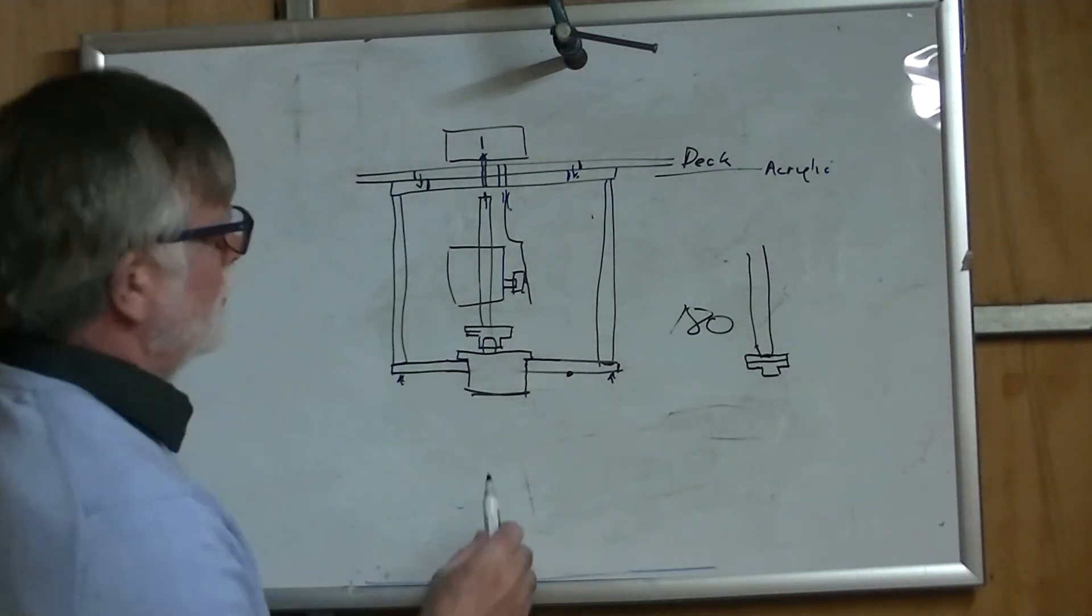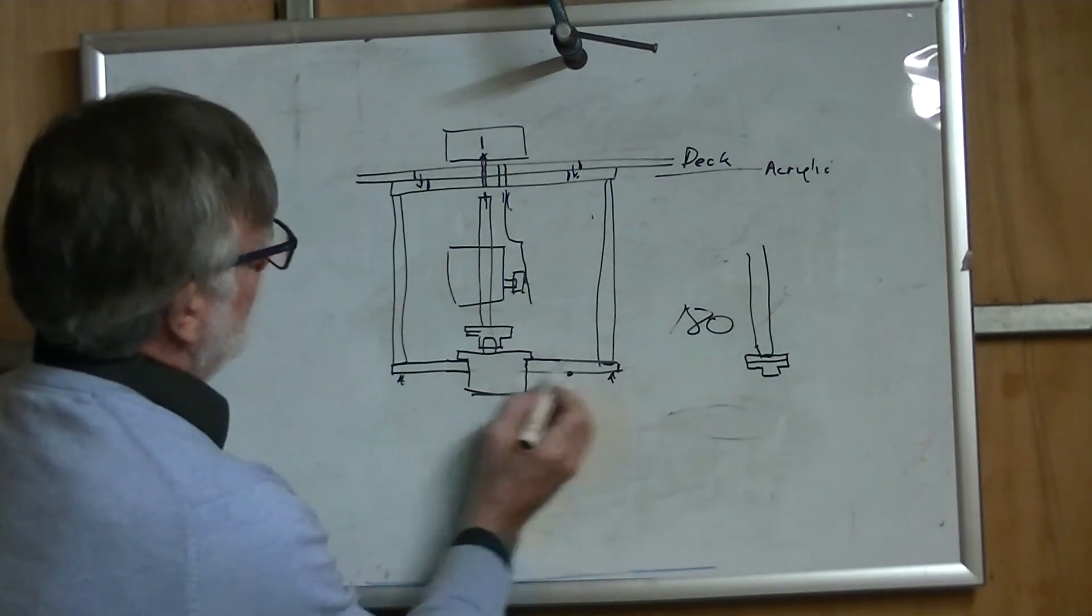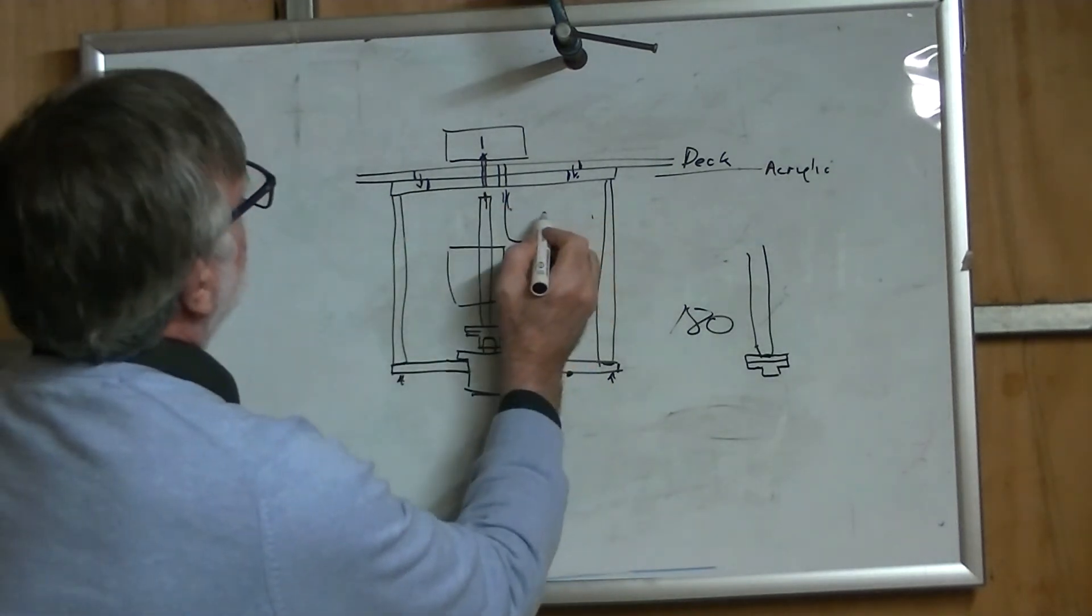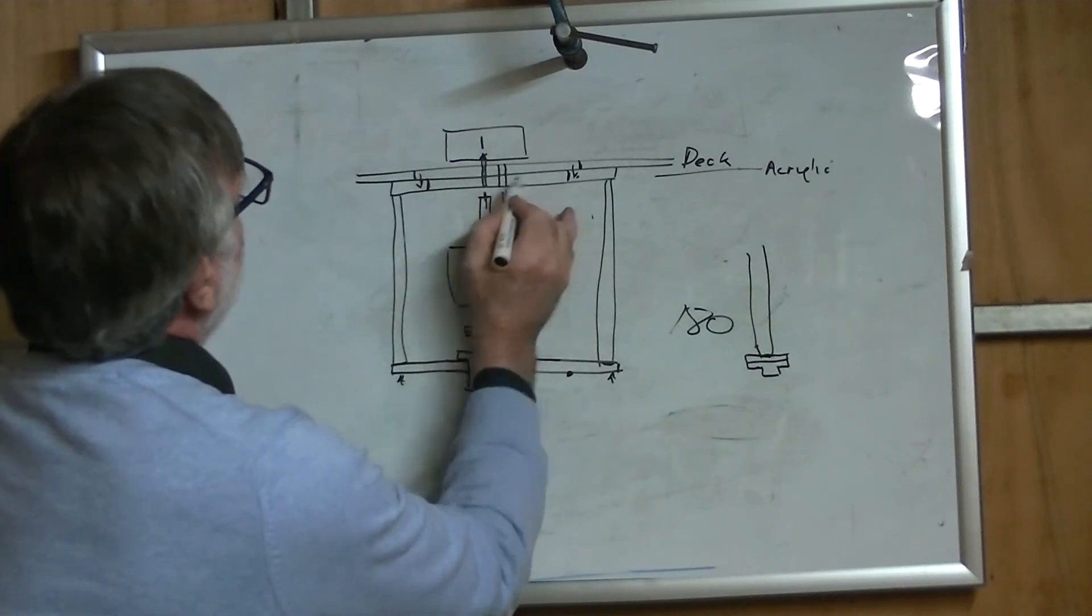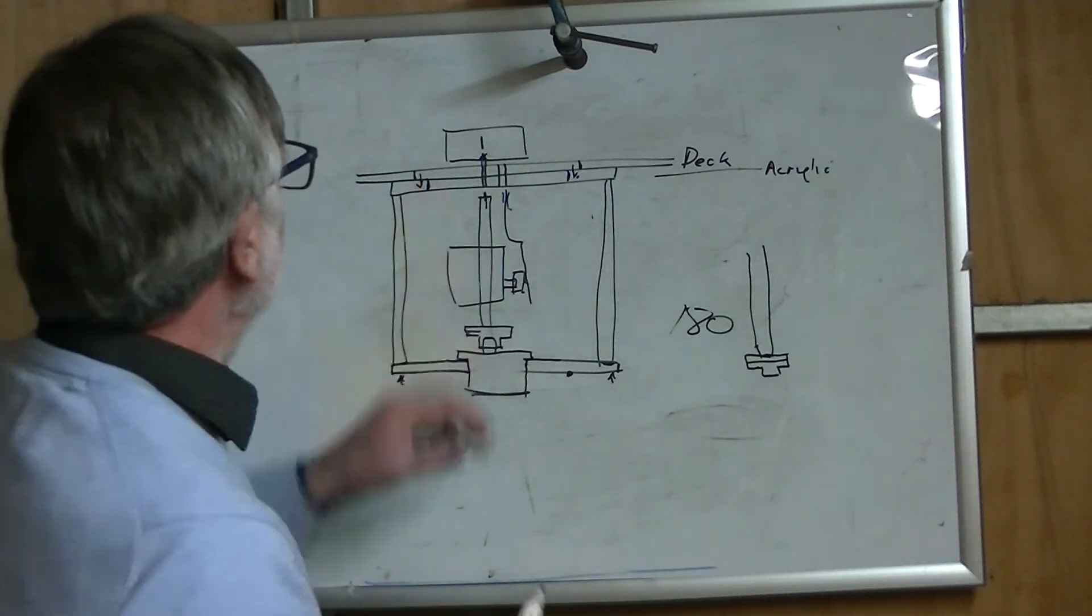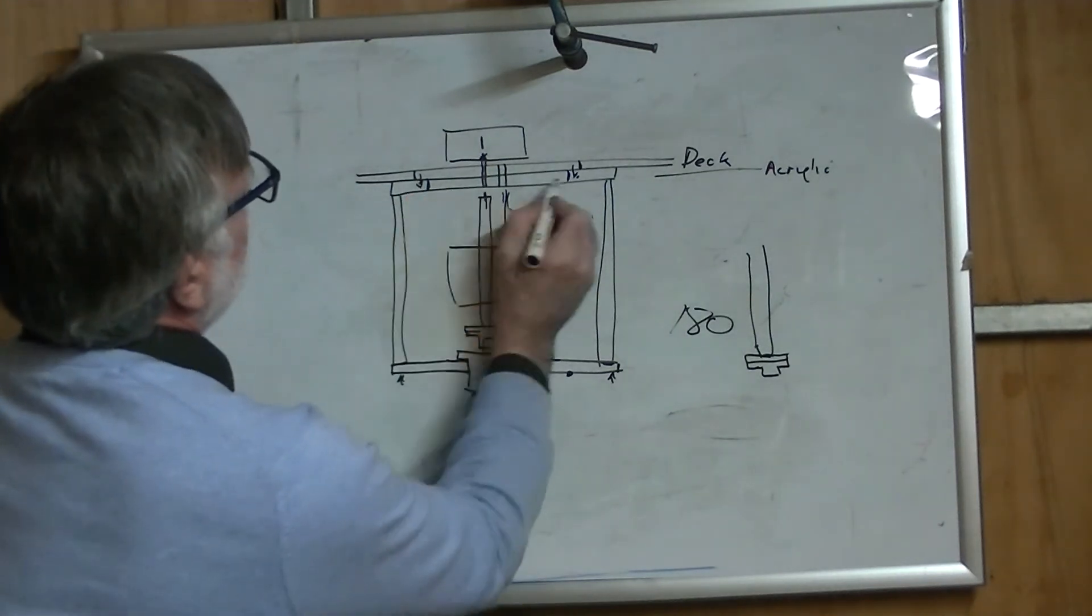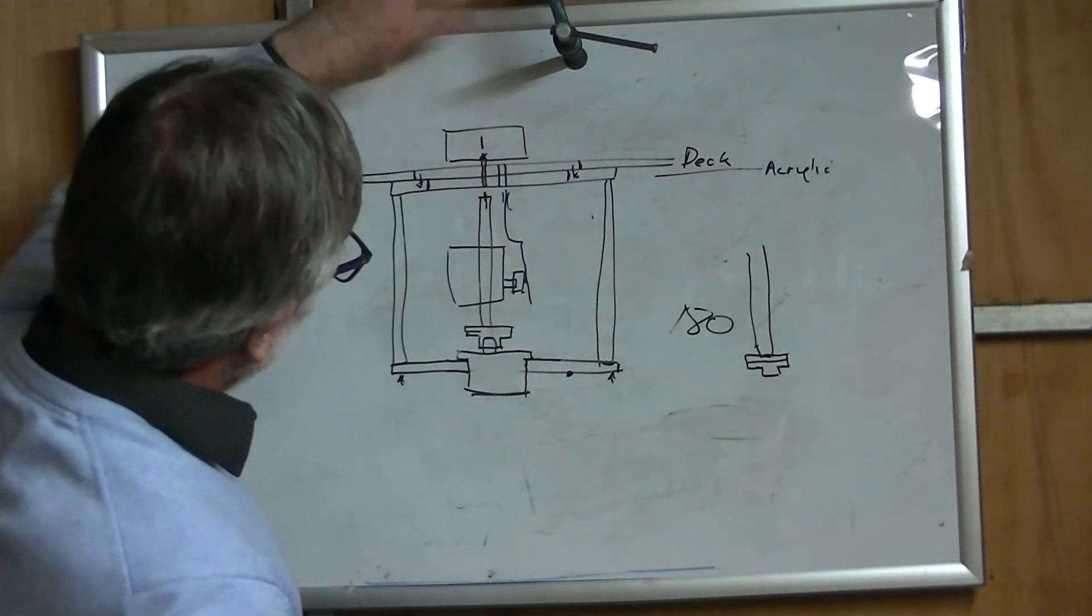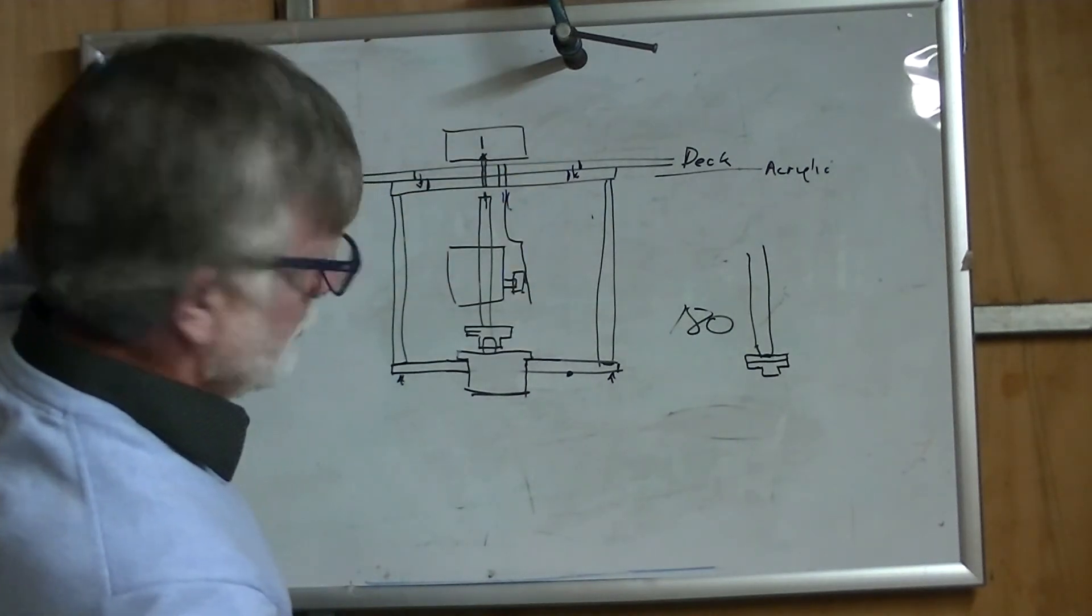And then I put some glue in here and some glue in there and some glue here and here and between there, and the whole thing. So that now when I want to remove this, I undo this screw and this screw, and lift this out of here, and it all comes out in one piece. Magic.